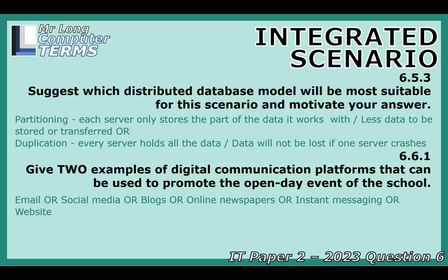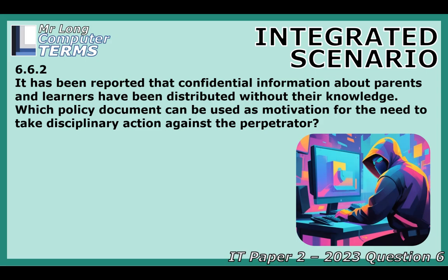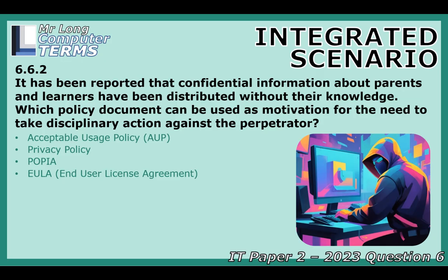The scenario mentions confidential parent and learner info being distributed without consent. What policy document could the school use to justify disciplinary action? The key one is the Acceptable Usage Policy, or AUP — it outlines rules for using school tech resources, what's allowed, what's not, and the consequences of misuse like sharing confidential data inappropriately. There might also be a specific privacy policy detailing how personal data is handled. Depending on the location, data protection laws like GDPR or POPIA would be highly relevant. AUP and privacy policy are the main school documents.